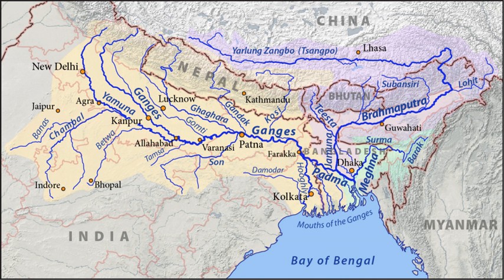The Ganges is joined by Khosi, Ghaghra, and Gandak from the Himalayas, and by Chambal, Betwa, and Son from the peninsular region.